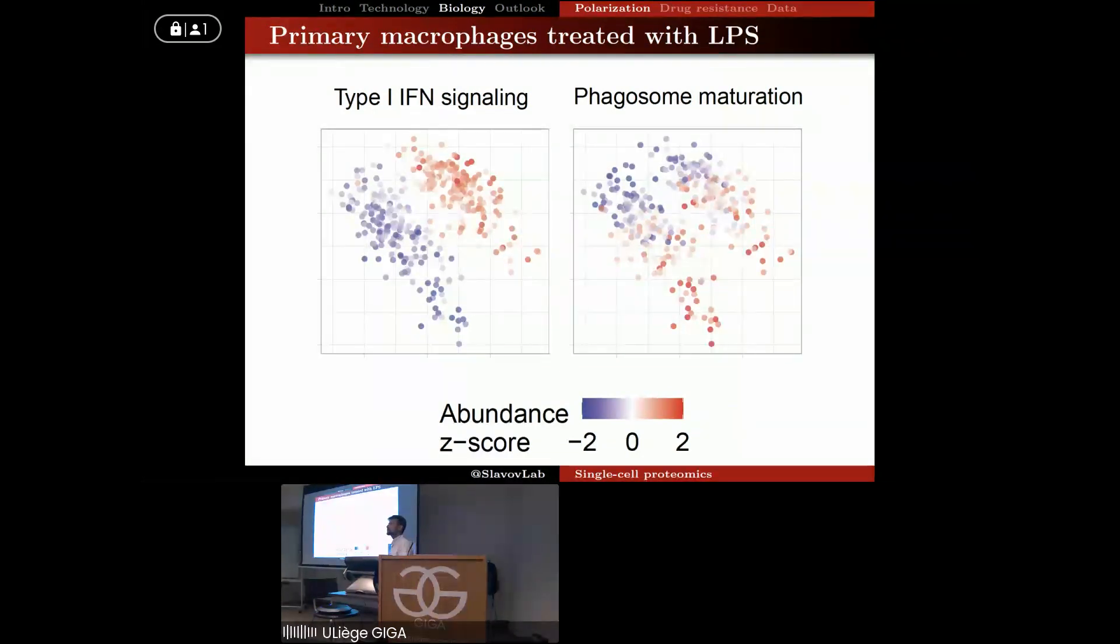And when we did this experiment, our collaborators at Harvard Medical School said, well, we think that these cells are really not all that different. So we don't know about these protein differences which we measure, but we're not sure that they correspond to any functional specialization. We said okay, good, let's test that. Let's test whether there are functional differences or not.